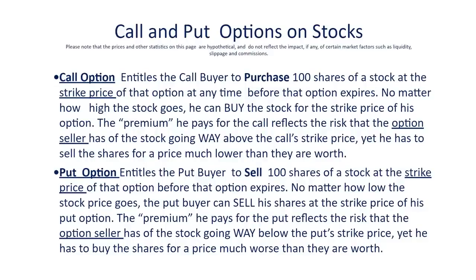A call credit spread is where we combine a short call option with a long call option in a certain formation that creates positive cash flow when you first enter the trade. A call option on a stock entitles the buyer of that option to purchase 100 shares of that stock at a certain price called the strike price of that option, regardless of what price the stock is actually trading at, at any time before that option expires. A put option, on the other hand, entitles the buyer of that put to sell 100 shares of a stock he owns at the strike price of that put, regardless of what price the stock is trading at, at any time before that option expires.